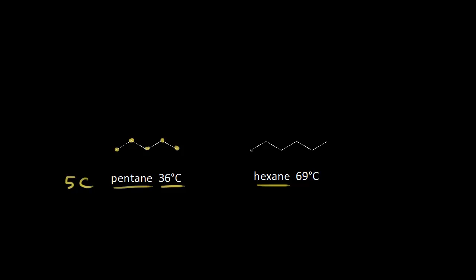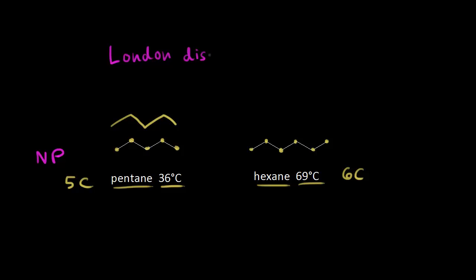Hexane has six carbons, so six carbons, and a higher boiling point of 69 degrees C. Let's draw on another molecule of pentane right here — so there's five carbons. Let's think about the intermolecular forces that exist between those two molecules of pentane. Pentane is a non-polar molecule, and the only intermolecular force that exists between two non-polar molecules is, of course, the London dispersion forces.